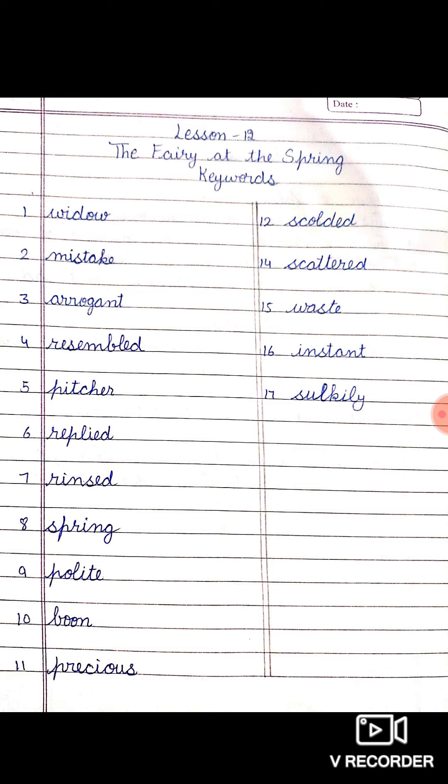Next is resembled. Resembled means looked like. The mother loved only the elder daughter who resembled her so closely. Next is picture. Picture means a large jug. The pretty girl brings water in a large pitcher. Next is reply. Reply means answer. The pretty girl replied, 'Yes, certainly, good mother.'